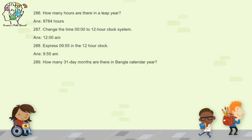Question 289: how many 31-day months are there in the Bangla calendar year? According to the new Bangla Academy calendar system from 2020, there are 6 months of 31 days. They are Boishak, Joishtho, Ashar, Sraban, Bhadro, and Agrahayon.